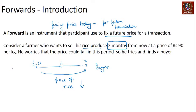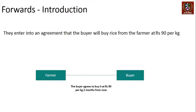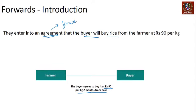If the farmer believes prices can go down, and the buyer believes prices can go up, both of them can fix the price at 90 rupees and both would be happy. The farmer wants to remove the risk of a price drop; the buyer wants to remove the risk of a price rise. So they enter an agreement: the buyer will buy rice from the farmer after two months at rupees 90 per kg. This agreement is a forward contract.